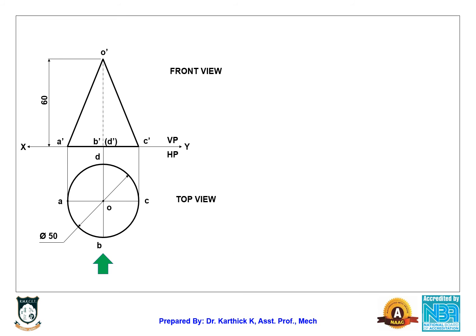The next step is to draw the isometric projection. To draw the isometric projection, enclose the top view circle within a box.